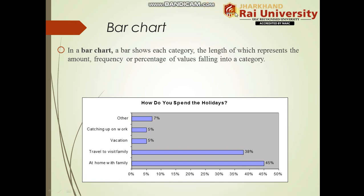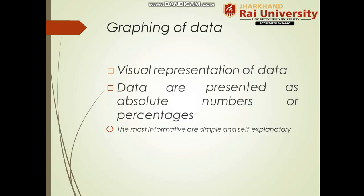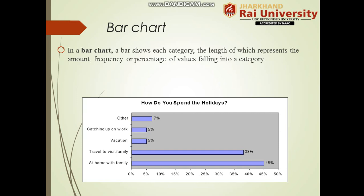Hello everyone. We are here with the second video lecture of our data analysis part. Before this we have seen graphing of data, and now let's move on to the output obtained using graphing of data. The first one is bar chart — in a bar chart, each bar shows a category, and the length represents the amount, frequency, or percentage of values falling into that category. For example, others are 7%, catching up on work at 5%, vacation at 5%.